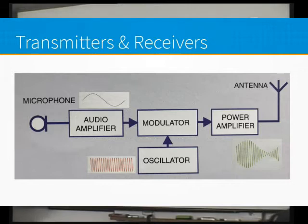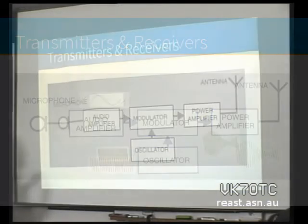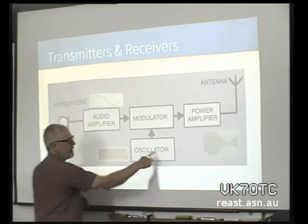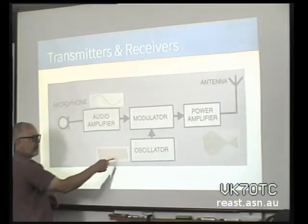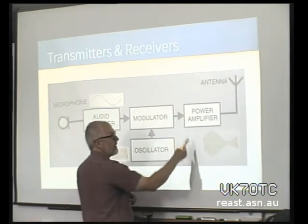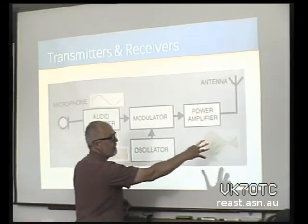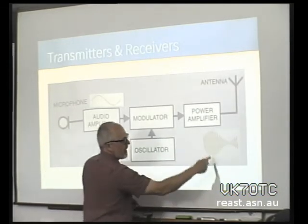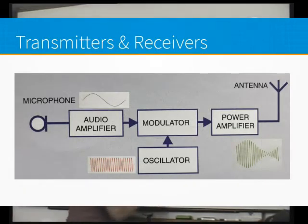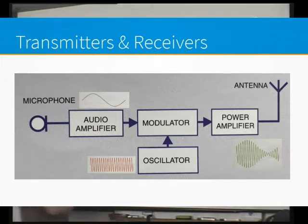Here's the simplest voice transmitter. You've got a microphone coming in — your voice, the low frequency. You've got an oscillator operating at the frequency you want, very high frequency. It goes into a modulator, and what comes out — in this case it's an AM transmitter — is the amplitude modulated signal based on your voice. You could do the same thing with an FM modulator and get a frequency modulated signal out the other end.